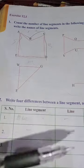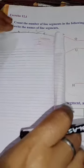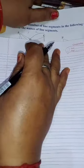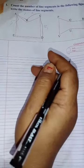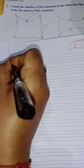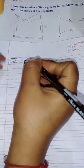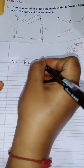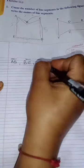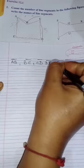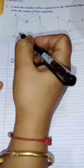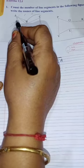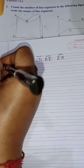For figure one, the line segments always start from A. The line segments are: AB, BC, CD, DE, and EA. You move in sequence — where you end the previous line segment, you start the new one from that point. So there are five line segments in figure number one.